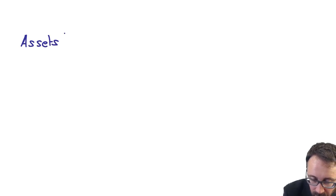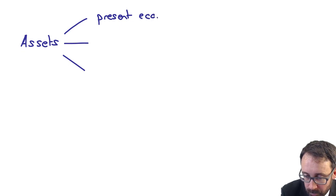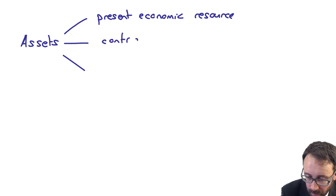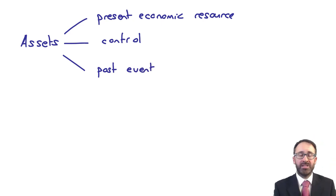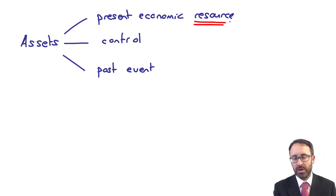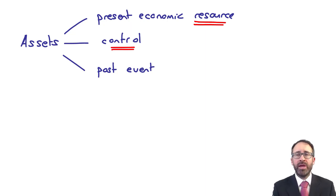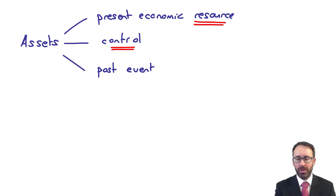Both inventory and PPE are assets. Looking at the definition of an asset: you have a present economic resource, you control that asset, and there is a past event. Both inventory and PPE meet that criteria — they are resources that bring you benefit through the sale of inventory and through the use of PPE. We control them because we decide how and to whom we sell inventory, and with PPE nobody else can use it while it's under our control.